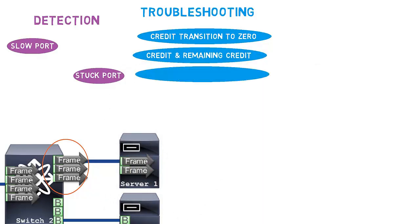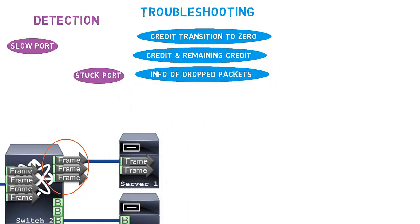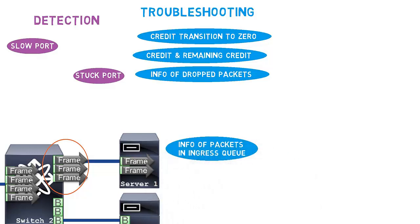MDS switches have the capability to display key information of the packets that are dropped due to timeout. Frames residing in the ingress queue can also be displayed.